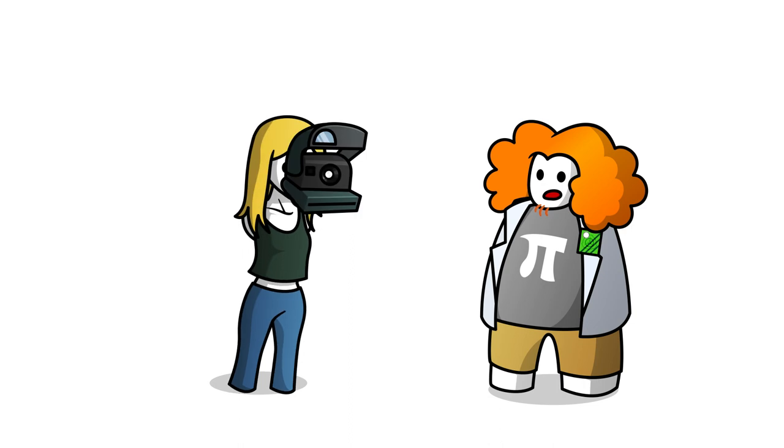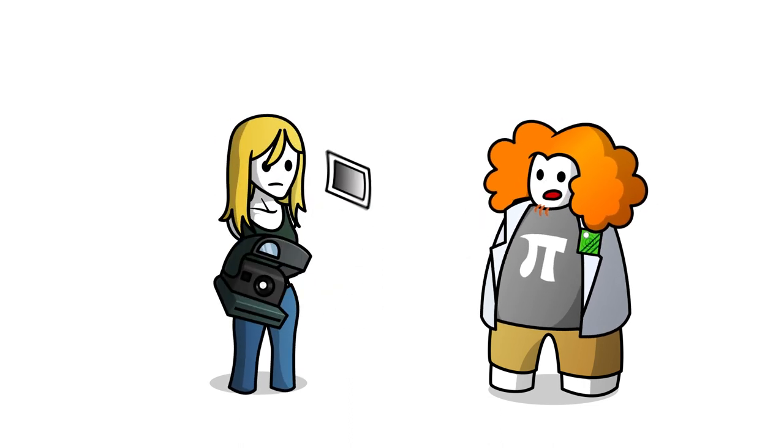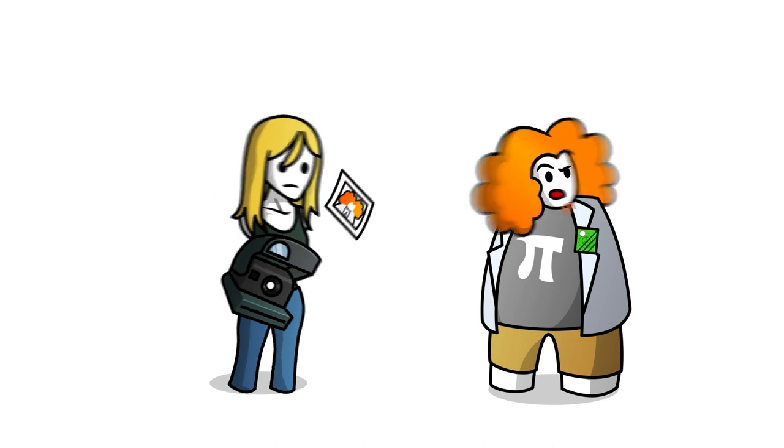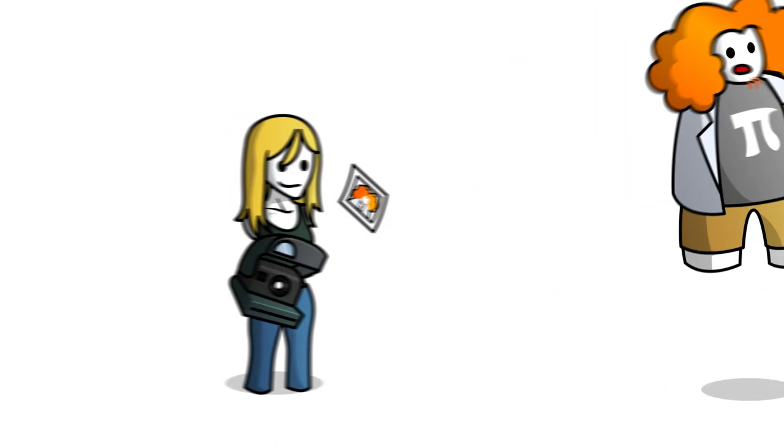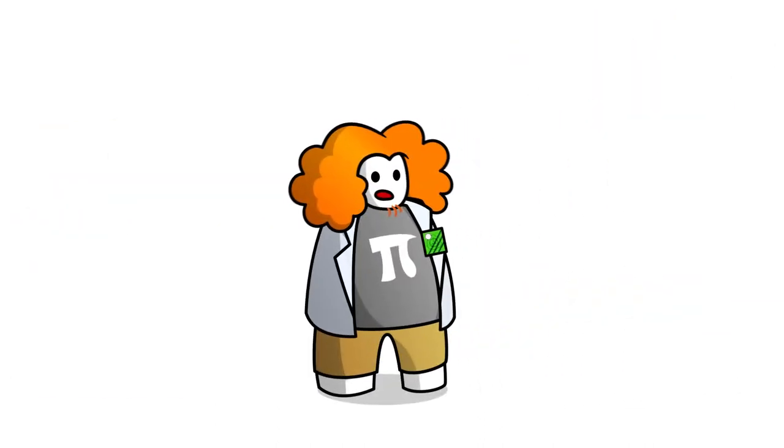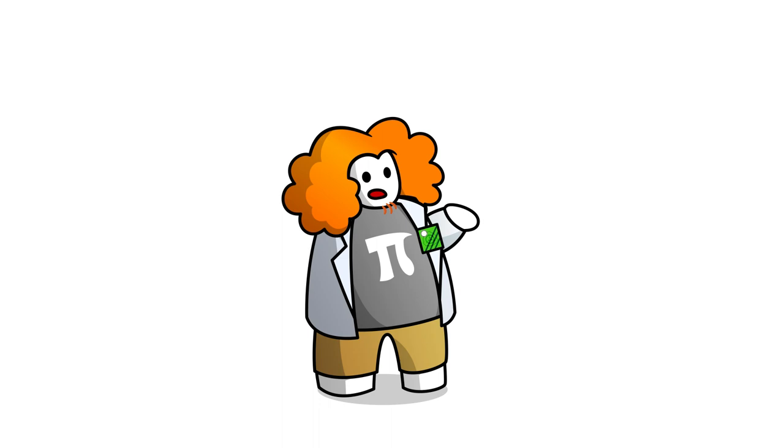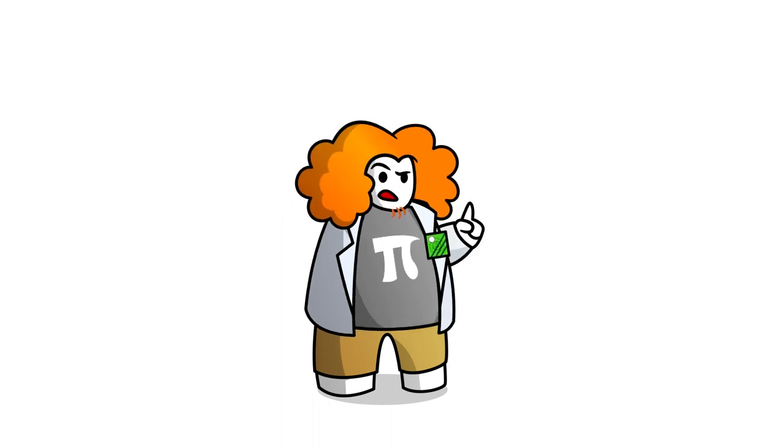SCP-105 is a girl who has the ability to reach into and manipulate photographs she takes with her Polaroid camera. I'm going to go a little long on this one because 105 really highlights something I didn't get to talk about in my last video. A pretty major recurring issue with the Foundation's methods.